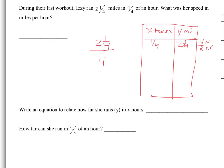I'm going to go ahead and do that division, changing to an improper fraction: nine-fourths divided by one-fourth. Multiplying by the reciprocal gives me nine over four, and so that's going to give me nine miles per hour.